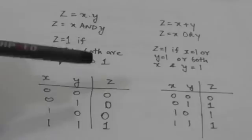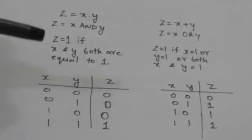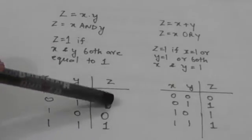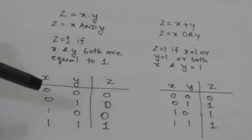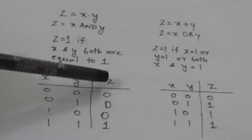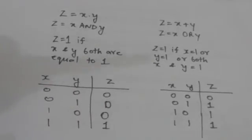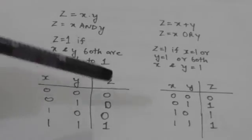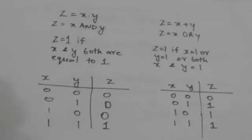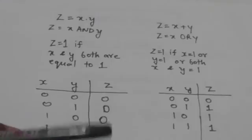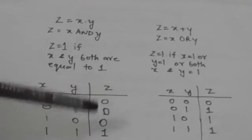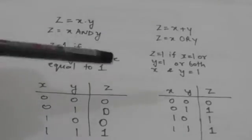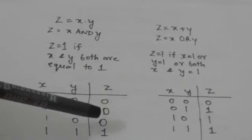When the value of x and y is both 0, the value of z will also be 0. When x is 0 and y is 1, the value of z is 0. When x is 1 and y is 0, the value of z is also 0. When both x and y are 1, the value of z will be 1. So the AND operation gives z equals 1 only when both x and y are equal to 1.